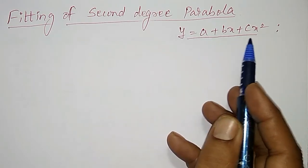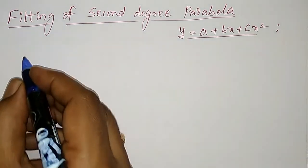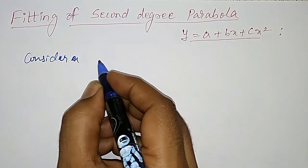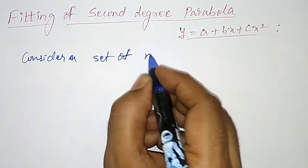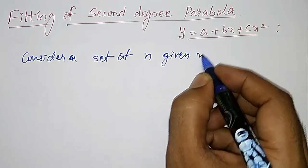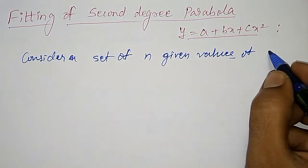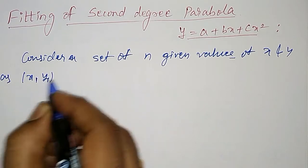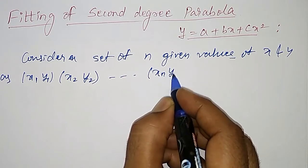But I am considering here a plus bx plus cx square. Now consider a set of n observed values of x and y as x1, y1, x2, y2, and so on up to xn, yn.